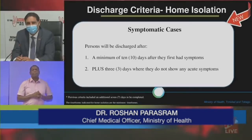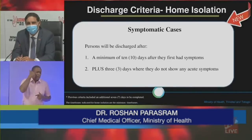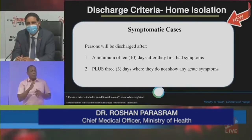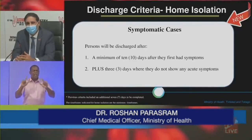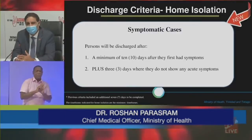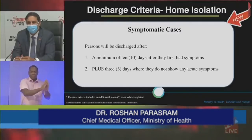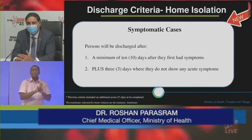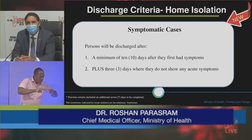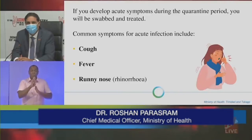For symptomatic cases — and this goes from mild cases all the way up to severe cases — persons will be discharged at a minimum of 10 days after the first onset of symptoms, and we're adding three days where they don't have any acute symptoms. As we stressed in previous weeks on long COVID, certain symptoms persist for a very long period of time — for example, shortness of breath, fatigue — so we are looking at the absence of acute symptoms in the absence of medication.